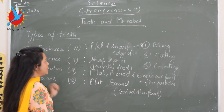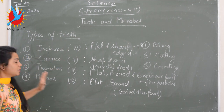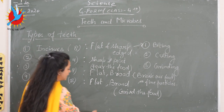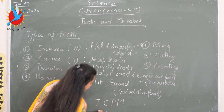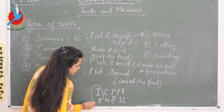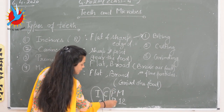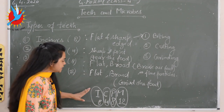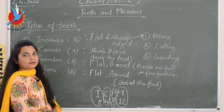Since the names and numbers can be difficult to remember, here is an easy formula: ICPM — 8, 4, 8, 12. Incisors are 8, canines are 4, premolars are 8, and molars are 12 in number. So the formula is ICPM: 8, 4, 8, 12. Thank you.